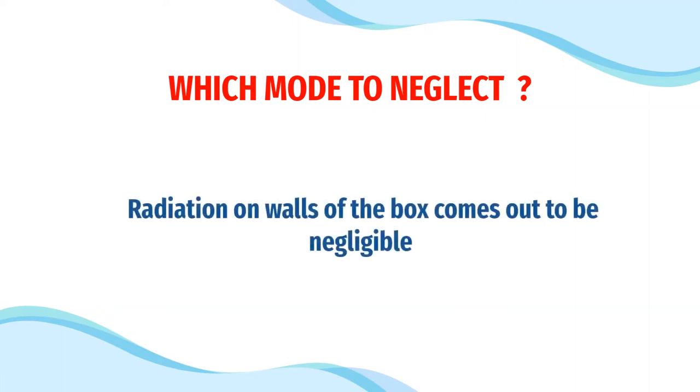Now, the question comes, is there any mode which we can neglect to simplify the system? So, on further calculation, we found out that radiation value comes out to be very low as compared to the conduction and convection term. Thus, we could neglect the radiation value in the further calculation.